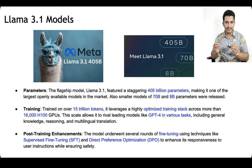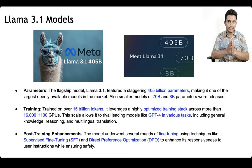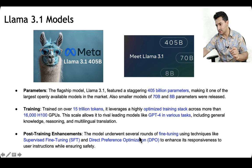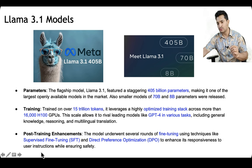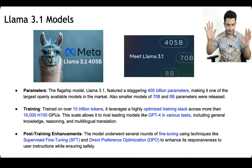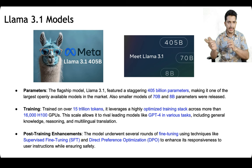The model was trained in the conventional LLM way — first pre-trained on next word prediction. Once pre-training was done, post-training enhancements applied supervised fine-tuning and direct preference optimization to enhance its responsiveness towards user interaction while ensuring safety. With pre-training, it learns all the knowledge in the world by predicting what word comes next given the previous few words.